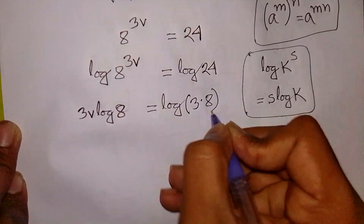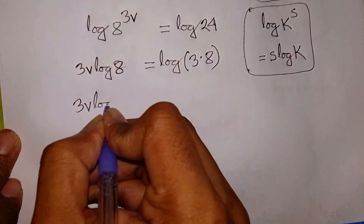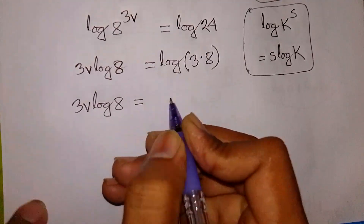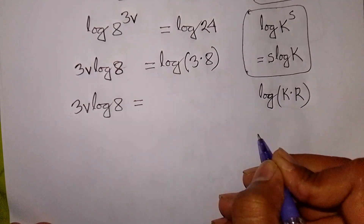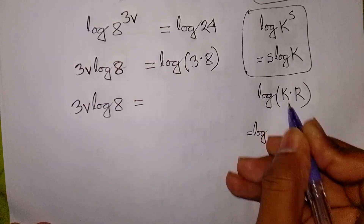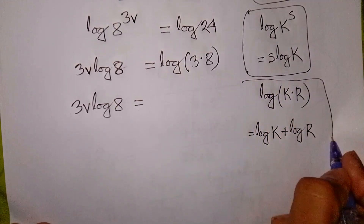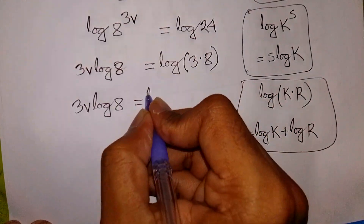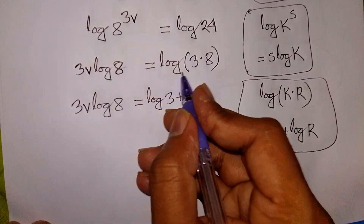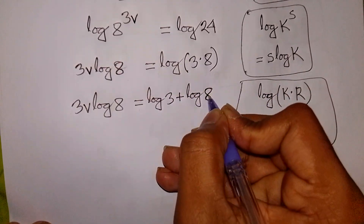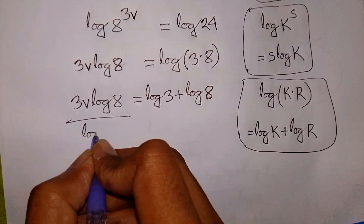Log 24 can be written as log of 3 times 8. In the next step, we apply the rule that log(k times r) is equal to log k plus log r. So log 24 becomes log 3 plus log 8. We now have 3V·log 8 is equal to log 3 plus log 8.